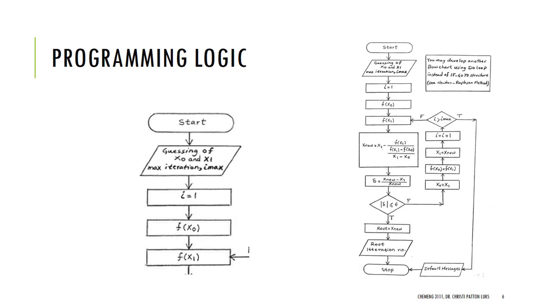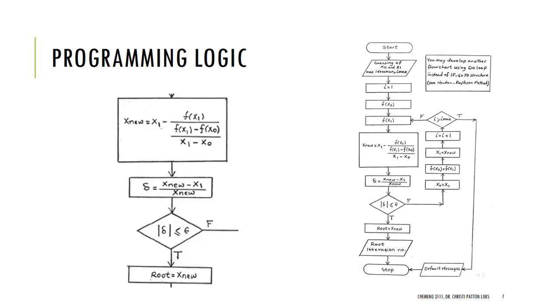The programming logic is fairly straightforward. We're going to start by guessing two first values and set a maximum number of iterations. And then we'll initiate our loop at i equal to 1. We'll evaluate the function at x0 and x1, those first two values. And then we'll calculate the new value of x using this formula.